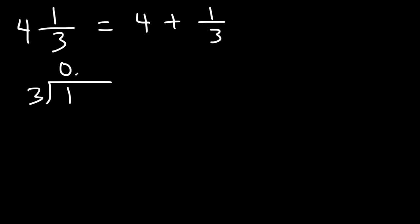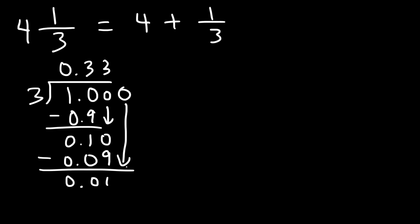3 goes into 1 zero times. 3 goes into 10 three times. 3 times 3 is 9. So 3 times 0.3 is 0.9. 1 minus 0.9 is 0.1. If we add a 0, 3 goes into 10 three times. So 3 times 3 is 9. And then we're going to get a 1. And notice that this is going to repeat. 3 goes into 10 three times. And once it keeps repeating like this, you know that we could say this is 0.3 repeating. So 1 over 3 is 0.3 repeating.